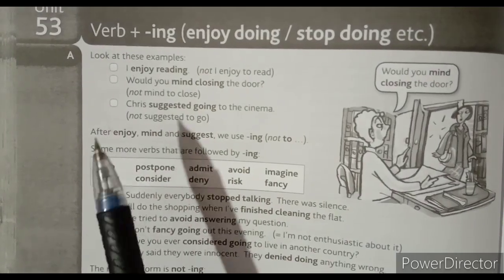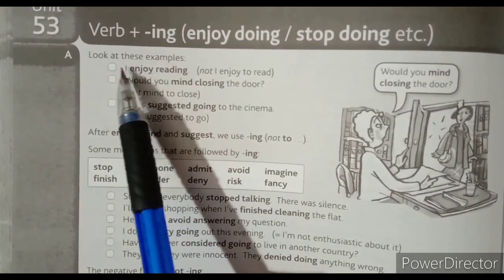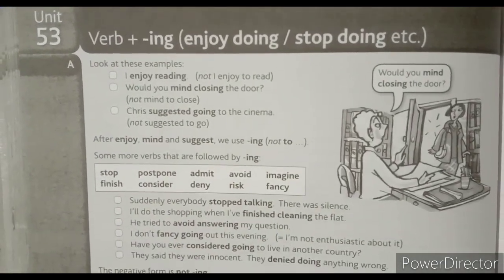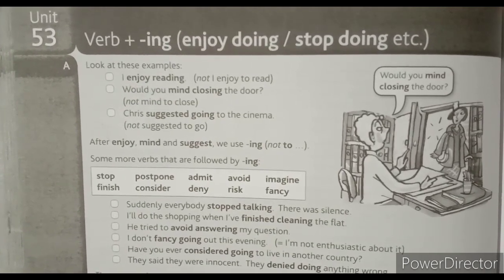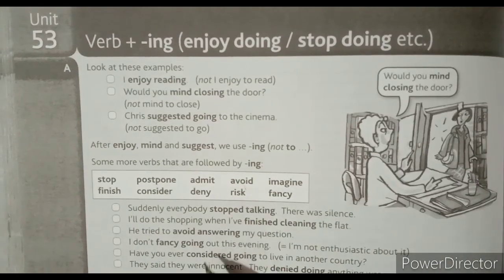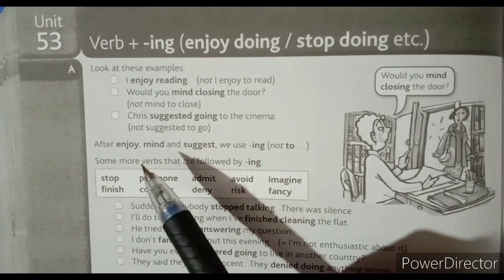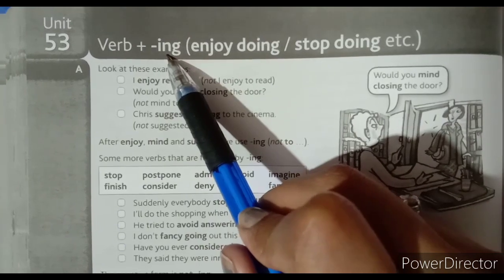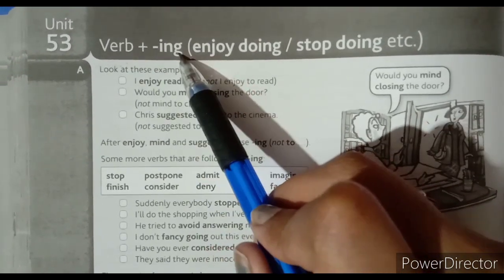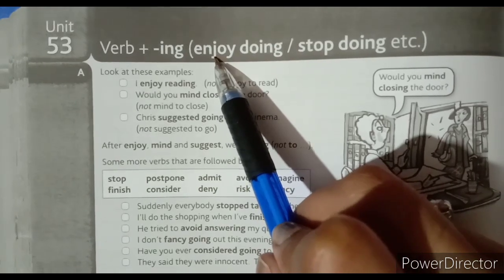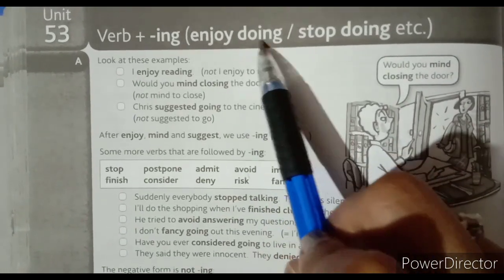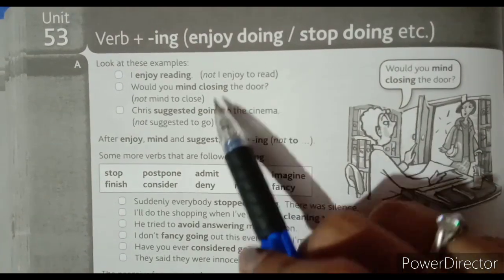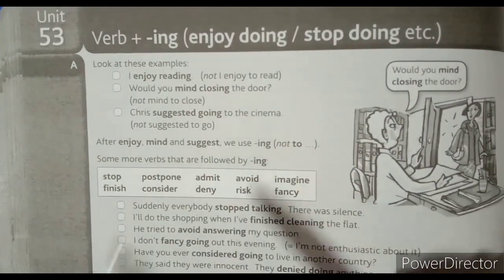Today's topic is unit number 53: verb plus -ing. This unit is very easy and interesting, and whatever sentences we use will be very much related to our life. We will see all those verbs where you use -ing — like 'enjoy' becomes 'enjoying', 'stop' becomes 'stopping'.